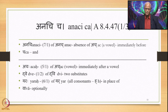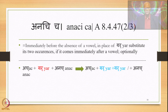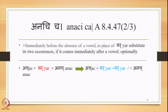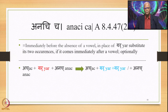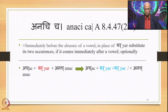Yaraha is 6th/1st of Yar, meaning all consonants minus Ha, so Yaraha means in place of Yar. Va means optionally. The meaning of Anachicha: immediately before the absence of a vowel (Anachi), in place of Yar, substitute its two occurrences, if Yar comes immediately after a vowel. Do this optionally.